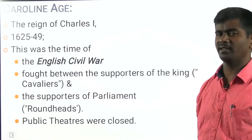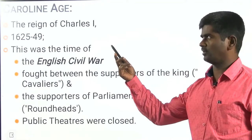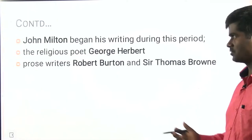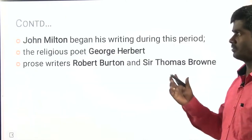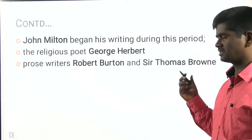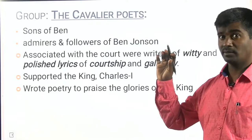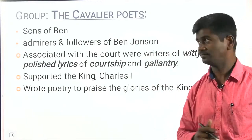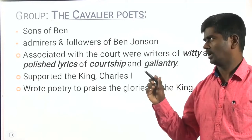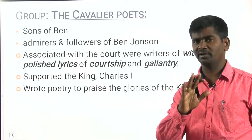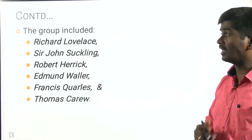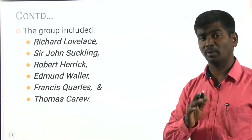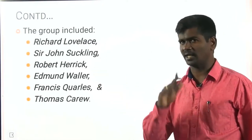Let us have a recapitulation of what I taught you yesterday. Caroline age 1625 to 49 is the age of the English Civil War, fought between supporters of the king and supporters of the parliament — Cavaliers and Roundheads. Public theatres were closed during this period. John Milton began his writing. The greatest religious poet was George Herbert, Robert Burton, Sir Thomas Brown. The popular Cavalier poets — Sons of Ben, Tribes of Ben — followers of Ben Johnson. They wrote polished lyrics of court gallantry and supported the activities of Charles I. Sir John Suckling, Richard Lovelace, Robert Herrick, Edmund Waller, Francis Carew, and Thomas Carey are the popular writers.